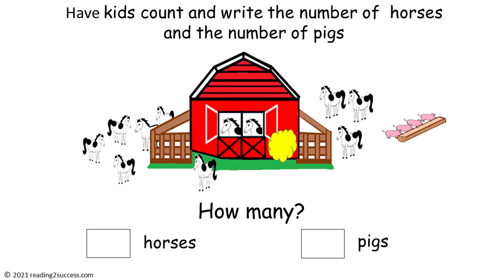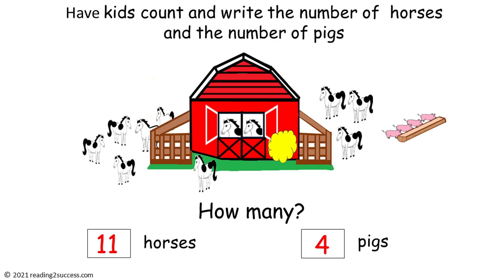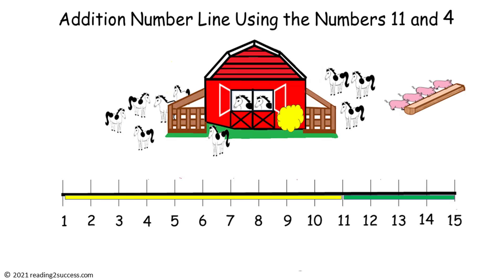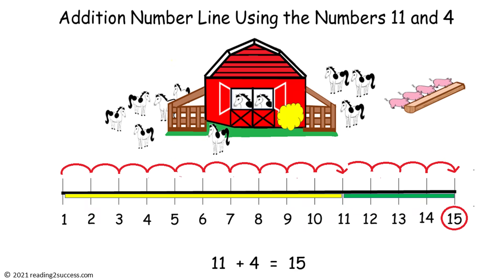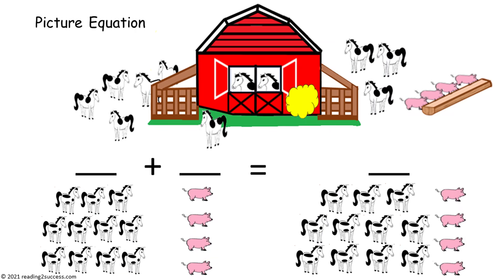Now we're going to have kids add two numbers that add up to fifteen. Begin by having kids count and write the number of horses and the number of pigs. The answers are eleven horses and four pigs. Next have kids complete the number line — first they are going to count eleven, and then they are going to count up four more. The answer is eleven plus four equals fifteen. Then have kids fill in the blanks: count the horses, then count the pigs, and then count them all together. Eleven horses plus four pigs equals fifteen horses and pigs.